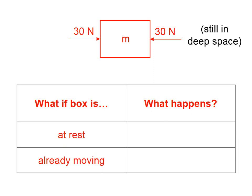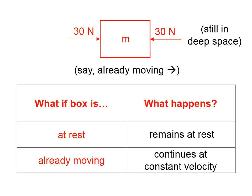Let's say we're still in deep space. Now we have a mass with two 30 Newton forces pushing on it from either side. If the box is at rest and we apply both 30 Newton forces simultaneously, the object is going to remain at rest. If the mass is already moving, as it passes us we push it with 30 Newtons on each side — it's not going to speed up and it's not going to slow down because those forces cancel. So it's going to continue moving at that constant velocity. This object is in equilibrium.